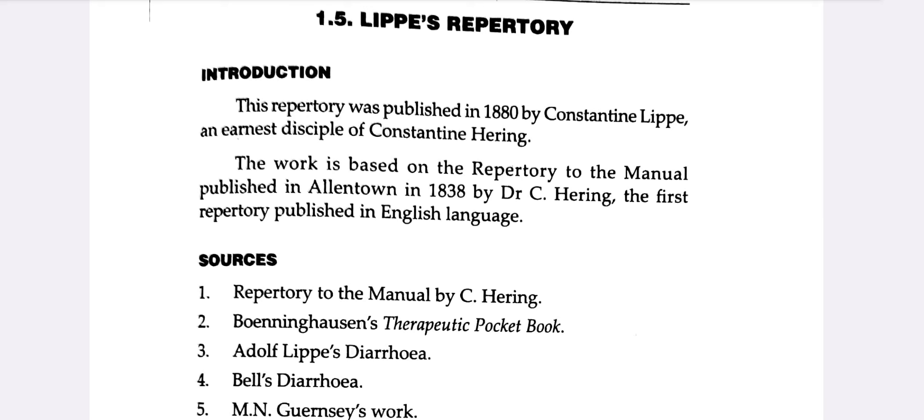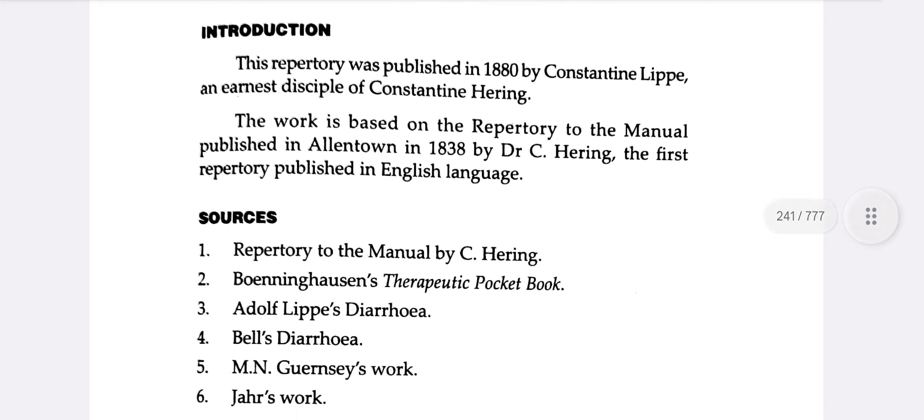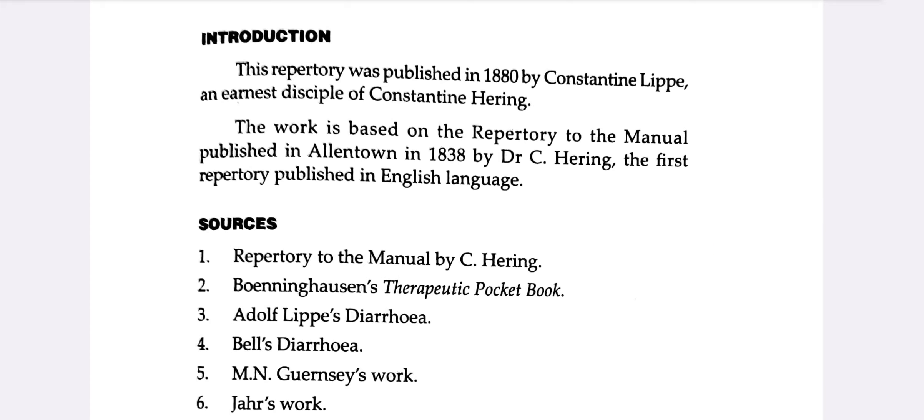To summarize the key publication details: Lippe Repertory was published in 1880 by C. Lippe. It is based on Dr. C. Hering's Repertory to the Manual published in 1838 in Allentown — the first repertory in the English language.